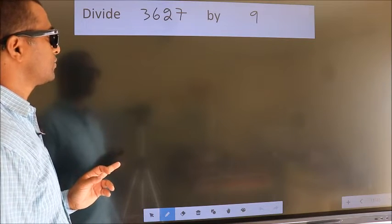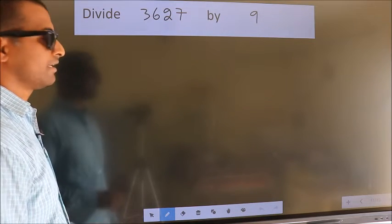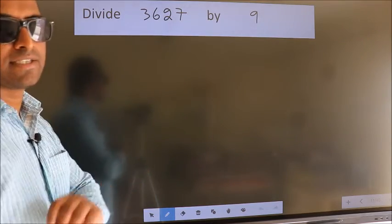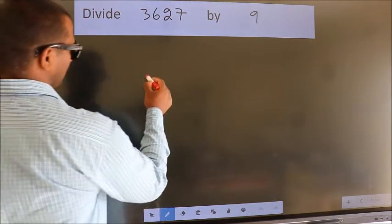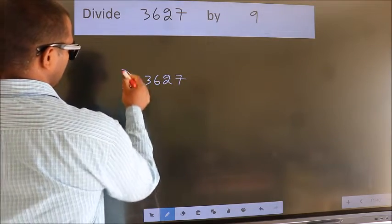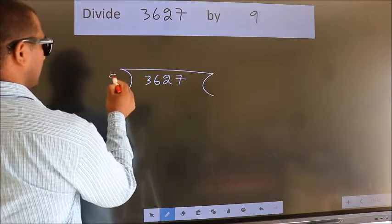Divide 3627 by 9. To do this division, we should frame it in this way. 3627 here, 9 here.